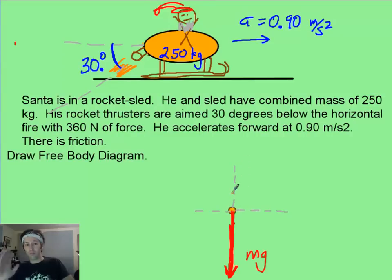Then I've got the normal force perpendicular to the ground, which is still going up regardless of whatever crazy things the rocket thrusters are doing. But it's not going to be as big as the weight anymore because of this upward force. So I'm going to draw the normal force a little bit smaller than the weight and label it N.